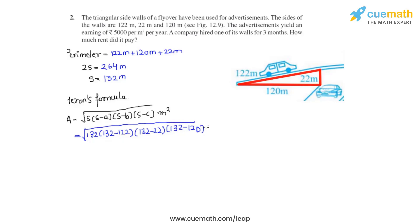On further calculation, we will get this as under root 132 times 10 times 110 times 12. This on further calculation gives us that the area of the triangular wall used for advertisement is 1320 meter square.